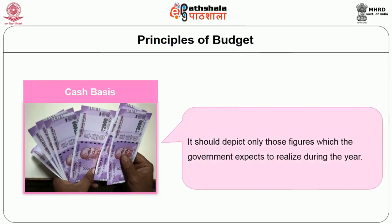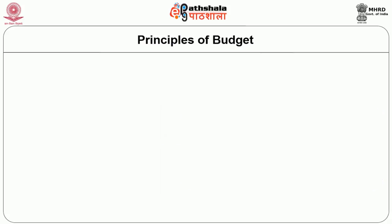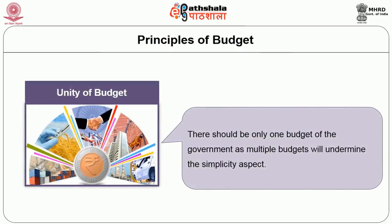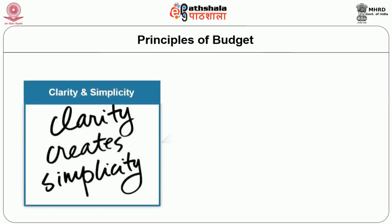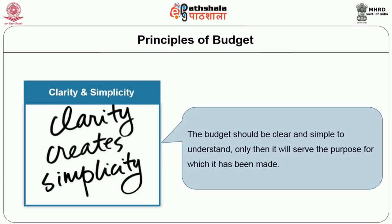Fourth, Cash basis — it should be prepared on the cash basis, i.e., it should depict only those figures which the government expects to realize during the year. If it is not followed, then there is a possibility that the department may find itself in a difficult situation. Fifth, Unity of budget — there should be only one budget of the government as multiple budgets will undermine the simplicity aspect. We should not forget that the budget is primarily made for the consumption of the legislature and the common man, both of whom are non-technical people, and multiplicity of budgets will add to their confusion. Sixth, Clarity and simplicity — the budget should be clear and simple to understand. Only then it will serve the purpose for which it has been made. The makers of the budget must know that the document is not for their understanding, but for those to whom they are accountable.